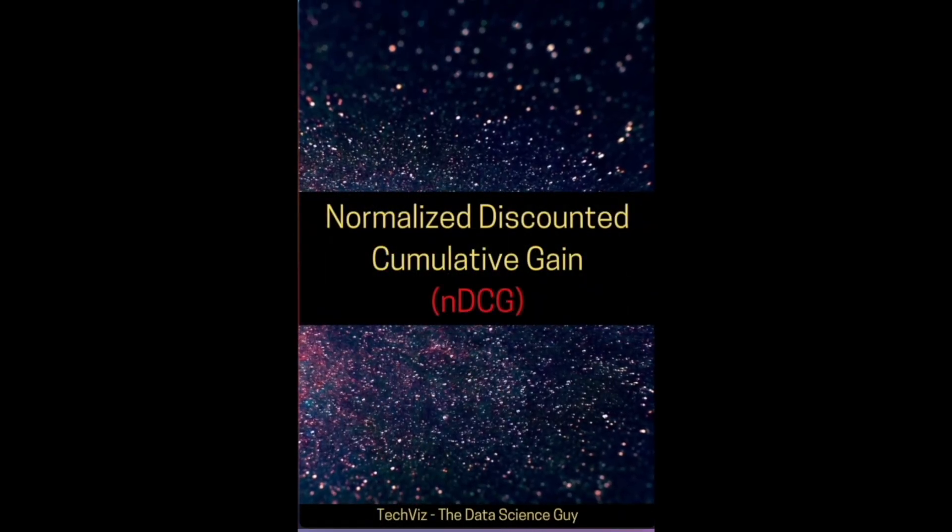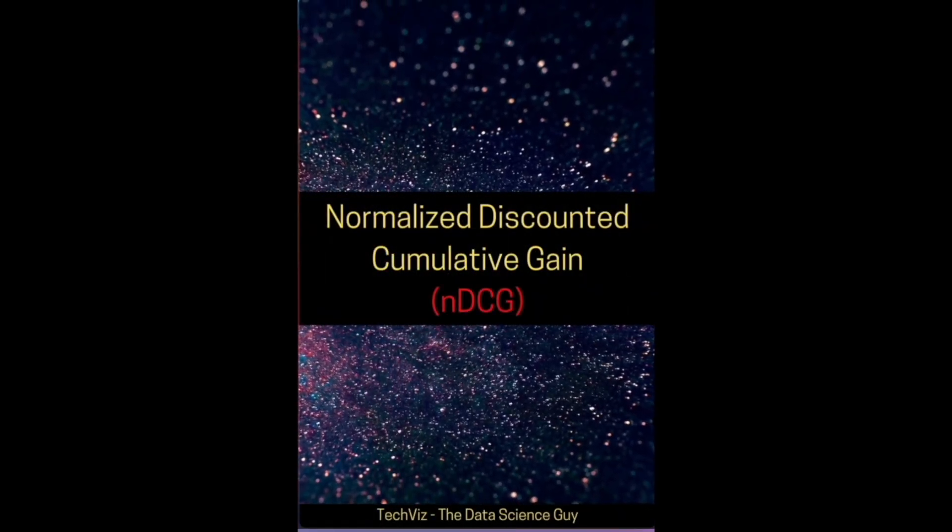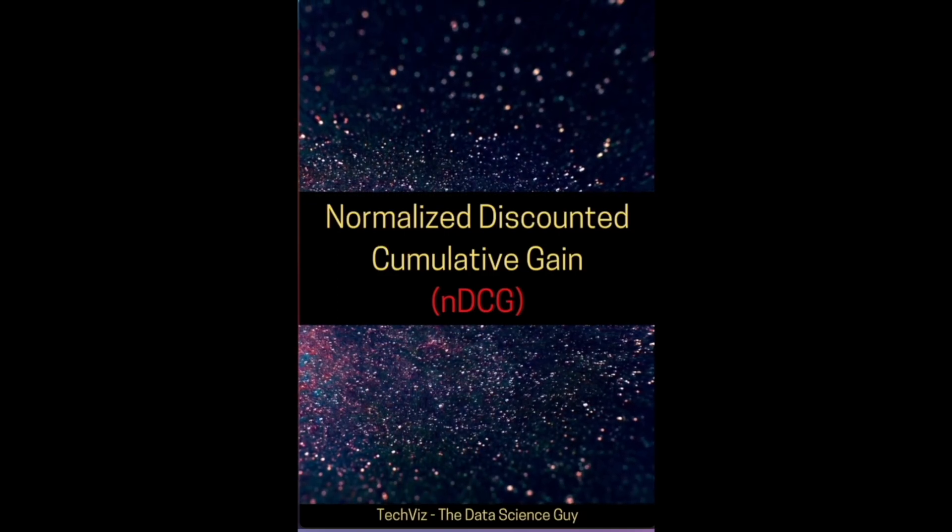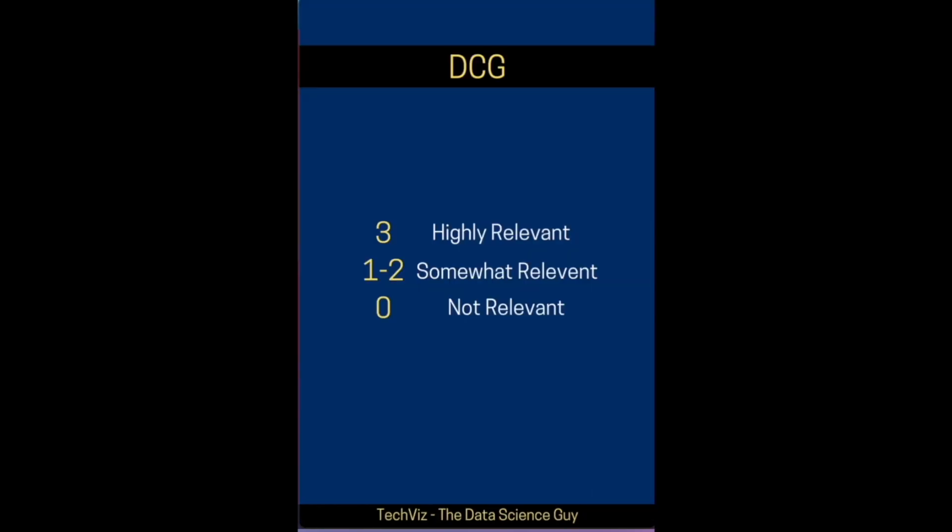Hello everyone. In this short, we're looking at Normalized Discounted Cumulative Gain, also called NDCG. It's a popular metric used in measuring the ranking quality of search systems. It starts by manually assessing the search results and ranking them on a scale from zero to three, where three means highly relevant, one to two is somewhat relevant, and zero refers to irrelevant results in the search ranking.